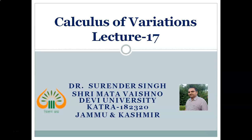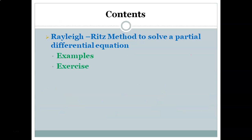Hello students. In this Lecture 17 on Calculus of Variations, we discuss the solution of partial differential equations using the Ritz method. The Ritz method in calculus of variations is used to find the approximate solution of boundary value problems. In our Lectures 15 and 16 we discussed boundary value problems involving one dependent variable, but in partial differential equations we use two independent variables, so the boundary conditions change accordingly — here we see the boundary conditions on a curve that encloses a certain region.